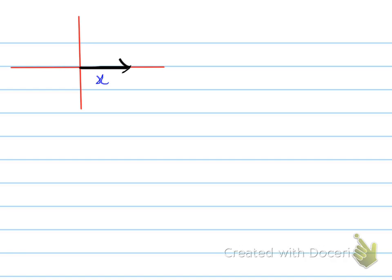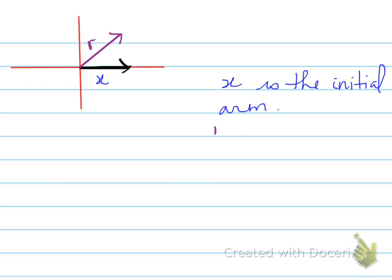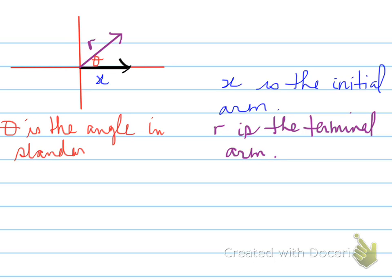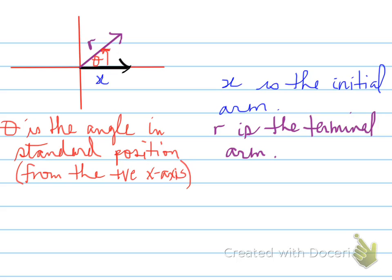x is on the horizontal — x is the initial arm, which is where it starts to measure the angle. R is the terminal arm, and this is the arm that makes the angle. So x is the starting position, the initial arm, meaning starting position, and r is considered the terminal arm. Theta is the angle in standard position, which is always measured from the positive x-axis.